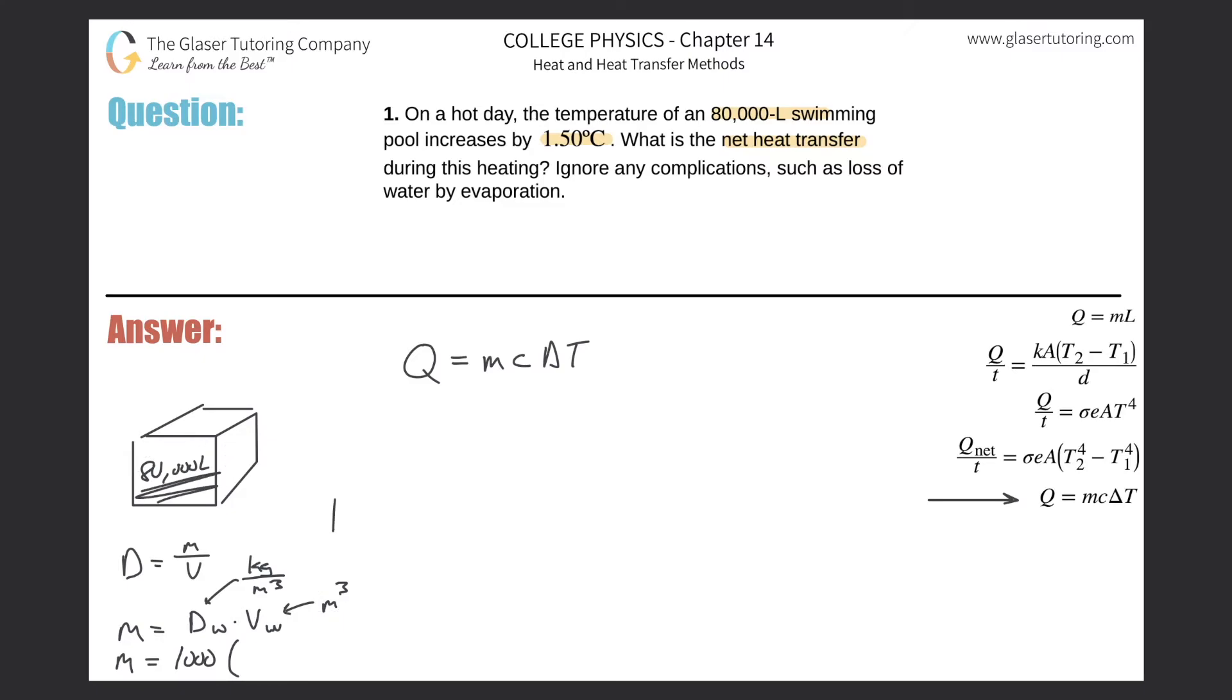You know that there's 1,000 liters in one cubic meter, so basically we just have to take this value and divide it by 1,000, or just move the decimal three places to the left. So it really becomes 80.0 cubic meters.